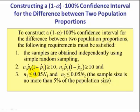Just as the previous video, n1 times p hat 1 times 1 minus p hat 1 has to be greater than or equal to 10 and same for the second group. And the sample size for both must be less than or equal to 5% of the original population.